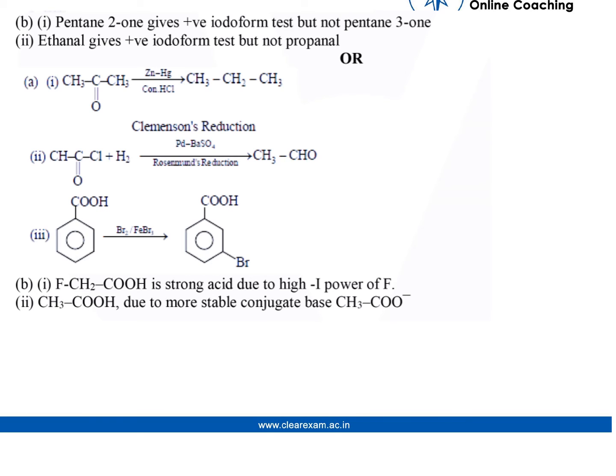The chemical test to distinguish between pentan-2-one and pentan-3-one: pentan-2-one gives a positive iodoform test but not pentan-3-one. The chemical test to distinguish between ethanal and propanal: ethanal gives a positive iodoform test.